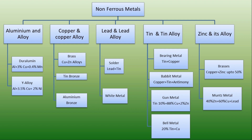Next, Babbitt metal — it contains copper, tin, and antimony, and contains almost 88% tin. Babbitt metals have a low coefficient of friction and they are also used in bearings. Gun metal contains 10% tin, 8% copper, and 2% zinc. It is also categorized as a copper alloy. It is used for making guns, hence known as gun metal, but it is also used in boiler fittings and sometimes making bearings.